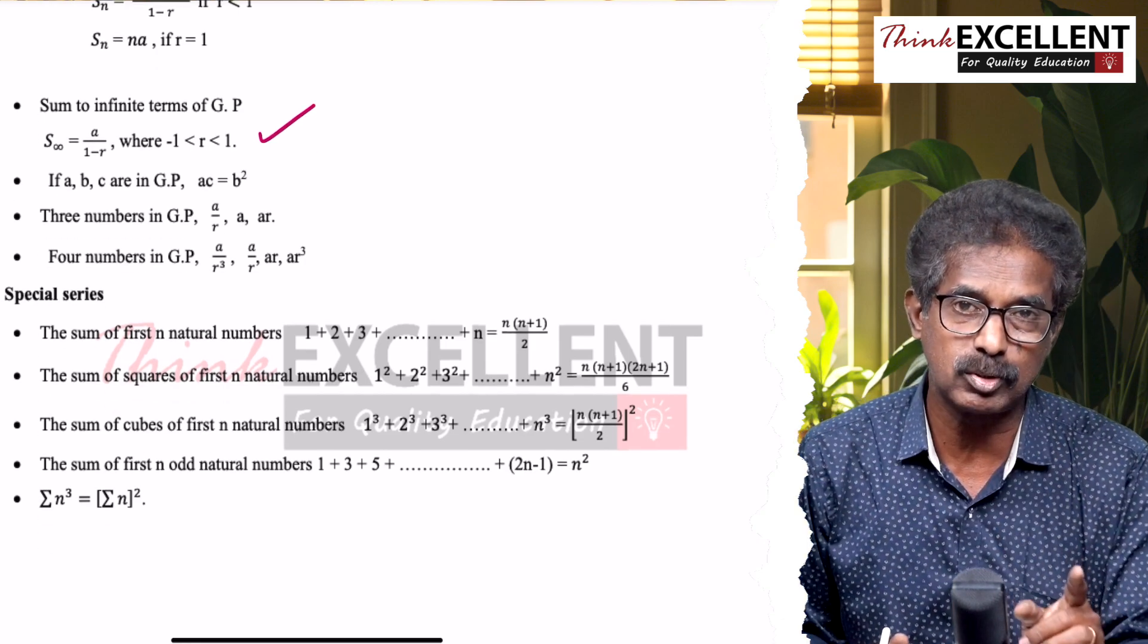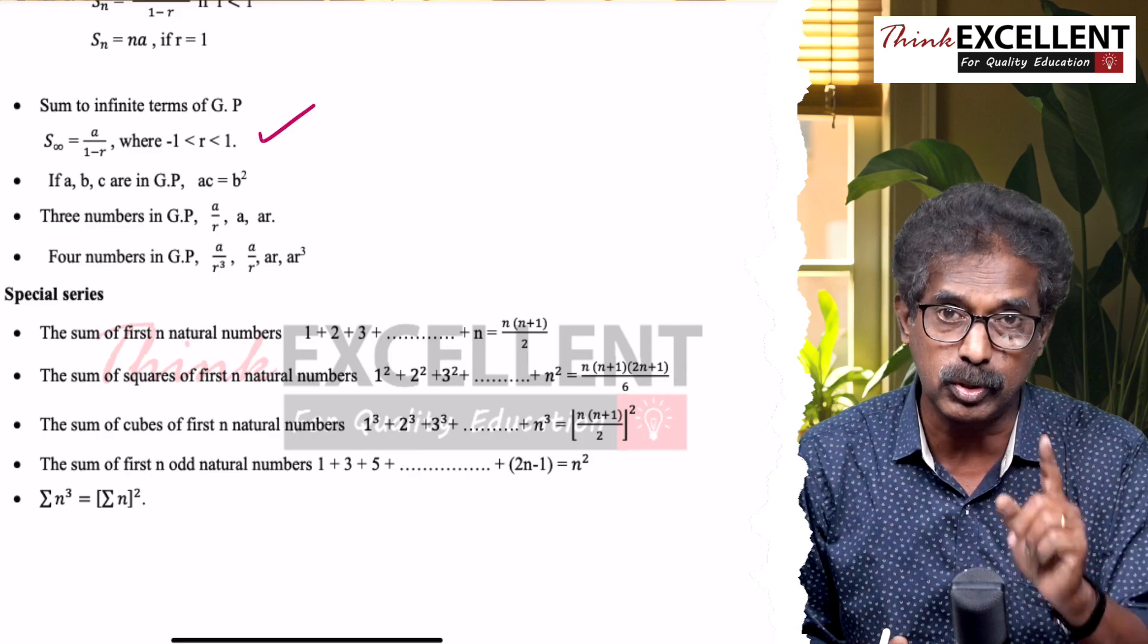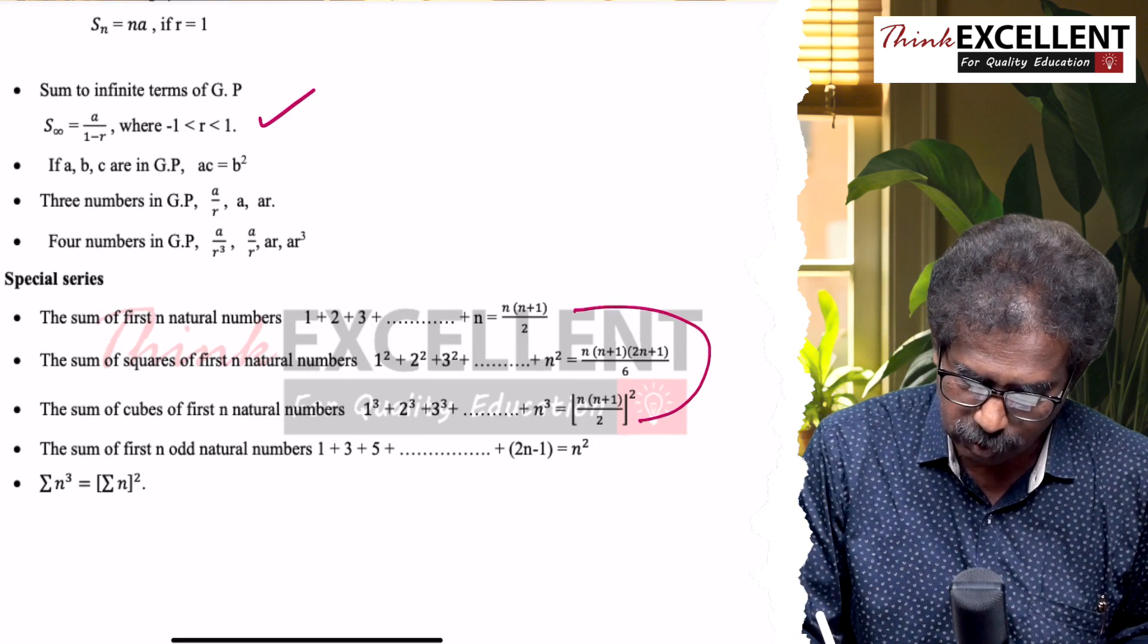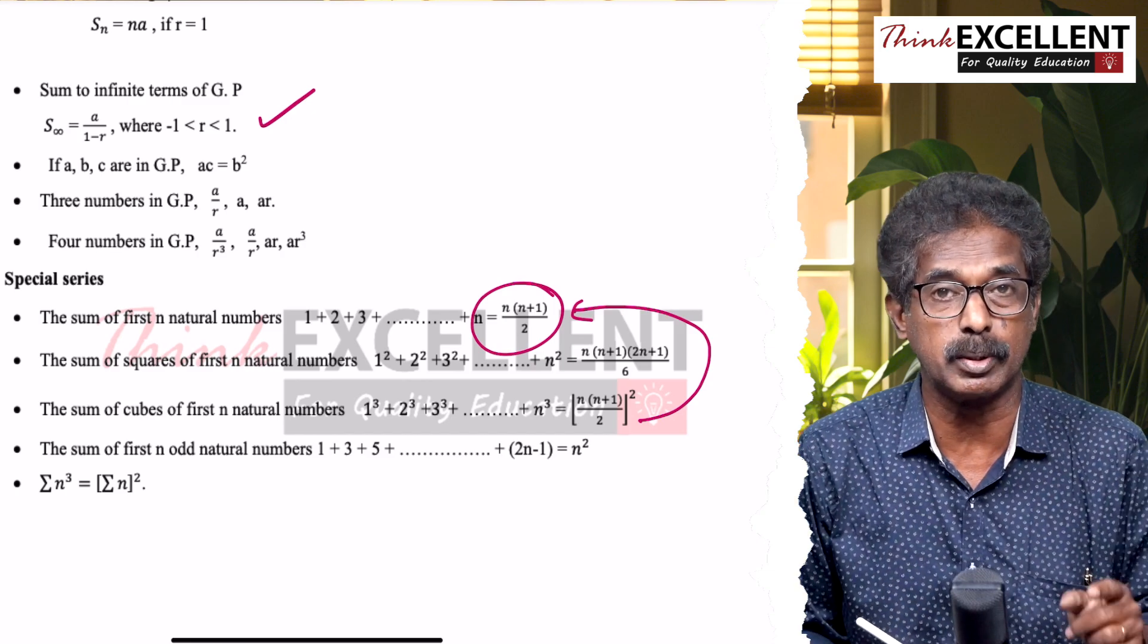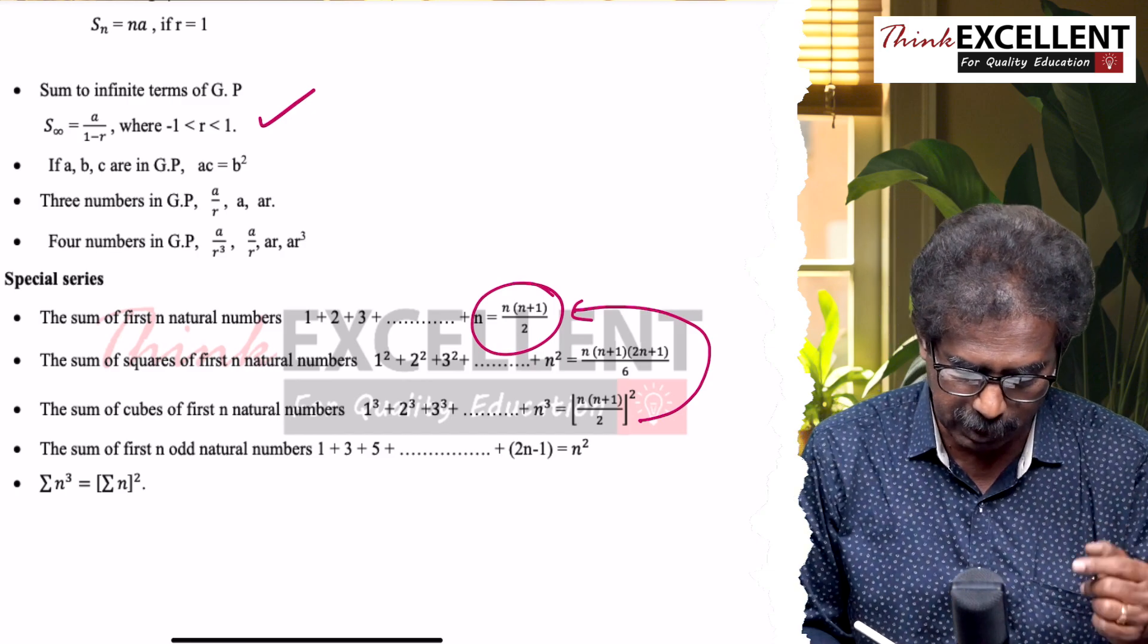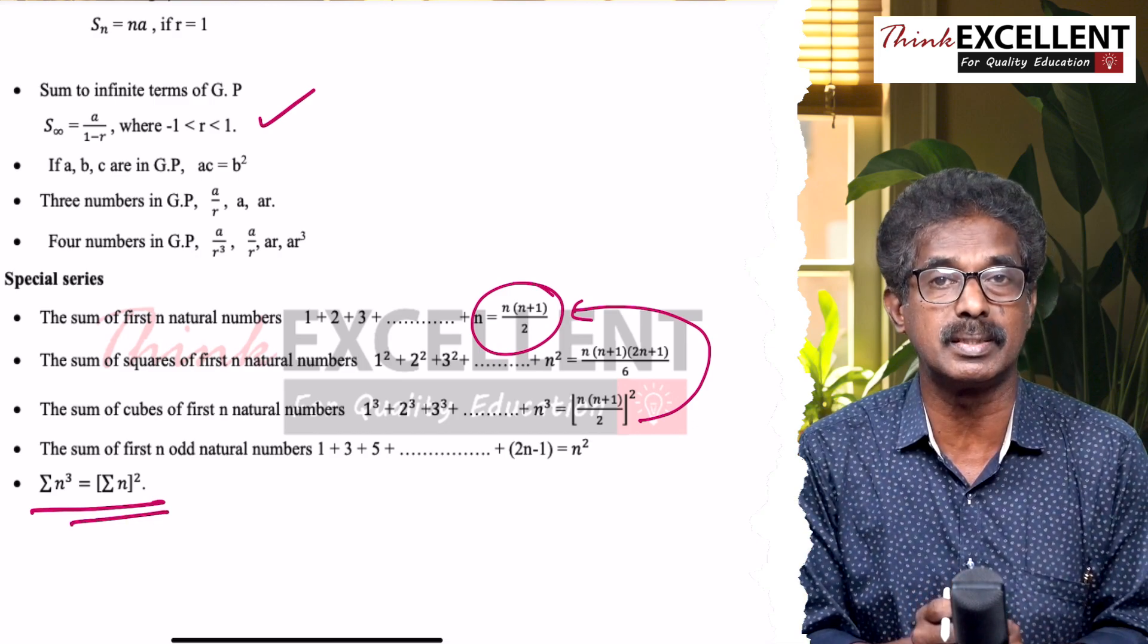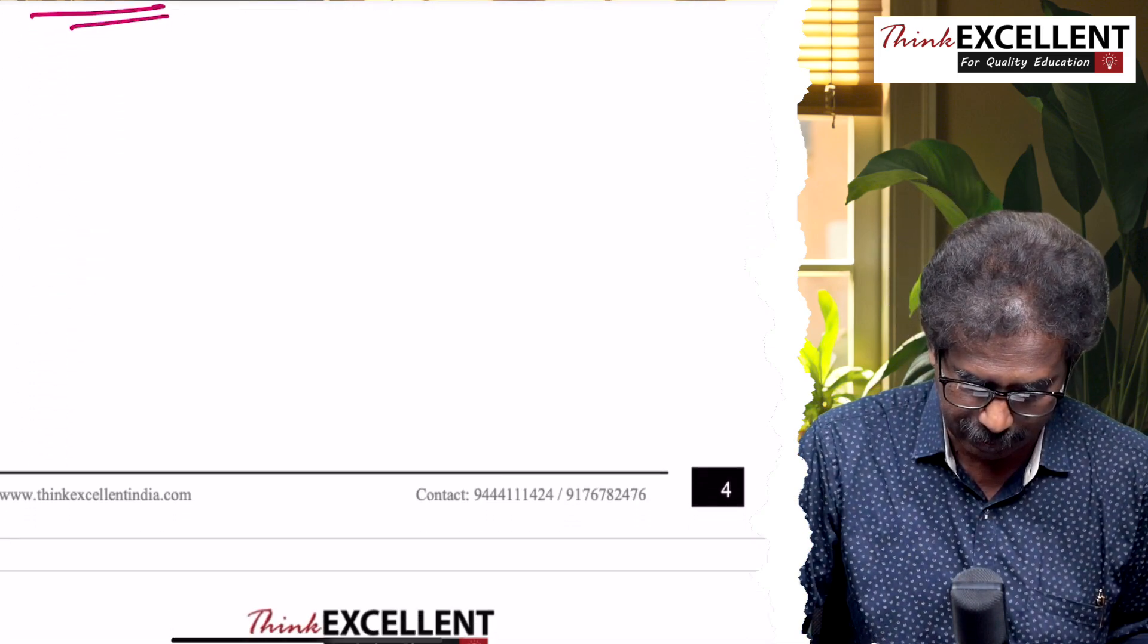Special series: sum of first n natural numbers, sum of the squares, sum of the cubes. The relation is: sum of natural numbers is n(n+1)/2. Cube is [n(n+1)/2]². That is very important. Sum of first n odd numbers is n².